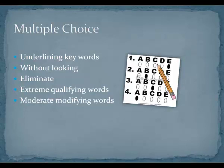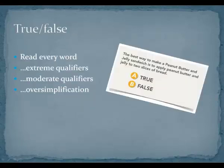Fourth, read each of the answers carefully. If the options include extreme qualifying words such as "always" or "never," these choices are usually wrong. Fifth, consider options with moderate modifying words such as "often" or "most" — these choices are usually the correct response. When it comes to true-false exams, read every word. For a statement to be true, every part of it must be true, while a statement can be false if only a small part of it is false. Statements containing extreme qualifiers such as "always," "never," or "only" are usually false. Statements containing moderate qualifiers such as "often," "generally," "some," or "usually" are often true. Statements that include generalizations or simplifications can be very dangerous — they typically try to indicate cause and effect and are often false.